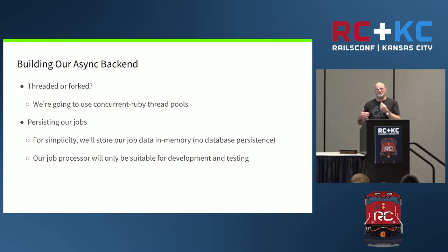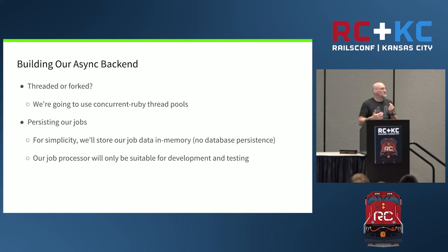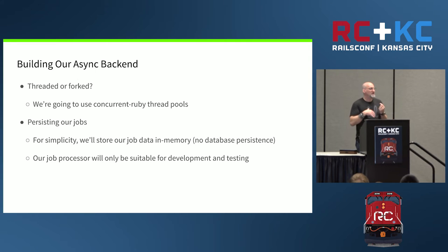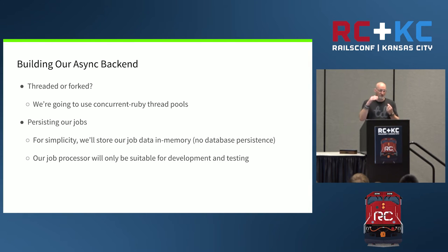Most job processors will also persist the job data into some sort of data store — Redis is very popular for this. The reason is that if your Rails process exits, either on purpose or by crashing, and all your job data is in memory, you'll lose it and those jobs will never run. Generally speaking, for production you want a job processor that stores job data in an external data store to persist beyond restarts. We're not going to do that here, in the interest of simplicity — our job processor won't persist to a data store, making it good for testing and development but not necessarily for production.